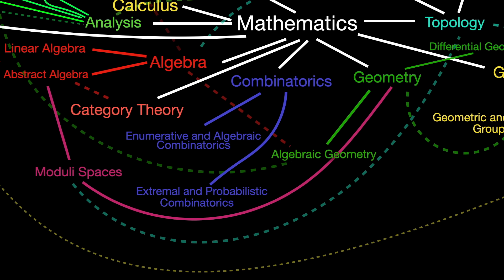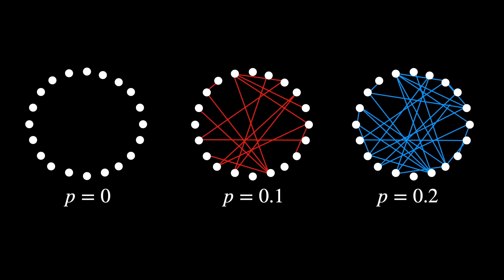Extremal and probabilistic combinatorics. The foundational technique here, the probabilistic method, involves showing the existence of a combinatorial structure that fulfills certain properties by showing the probability of randomly selecting a structure like that is non-zero.